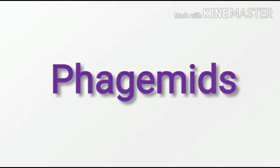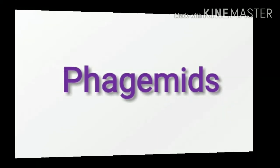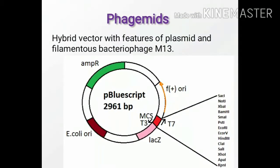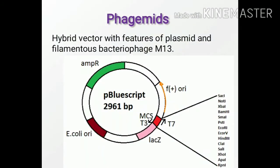The next vector is phagemids. Phagemid is a hybrid vector with features of plasmid and filamentous bacteriophage F1 or M13. An example for phagemid is P-bluescript, which has 2,961 base pairs.